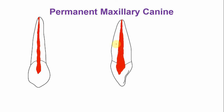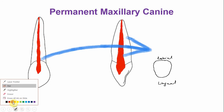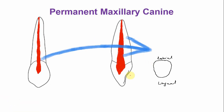In the cross-section at the cervical area of the root, this is the labial side and this is the lingual side. The canal is located in the center of the tooth, and mostly it is oval in shape — a large oval canal located in the center. Sometimes the canal is of a triangular shape.